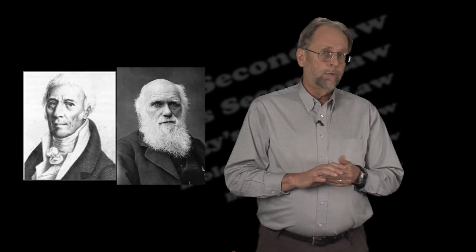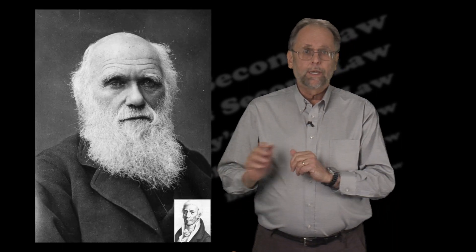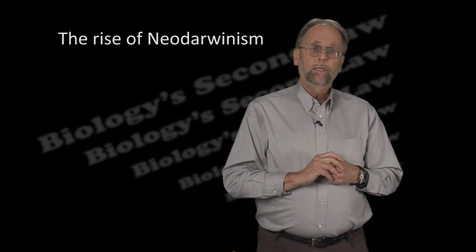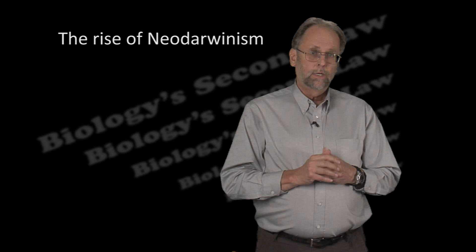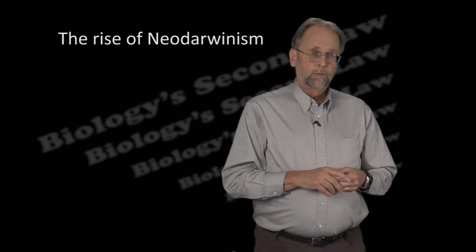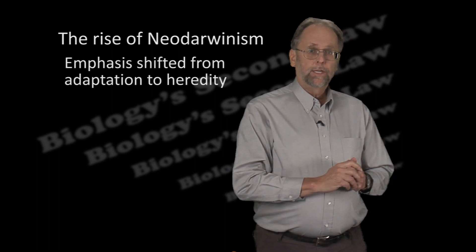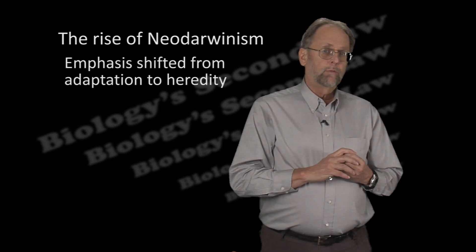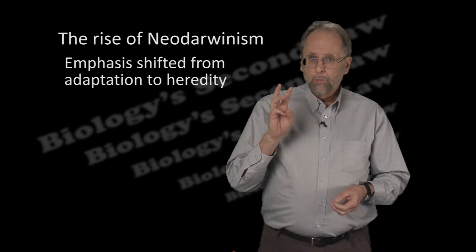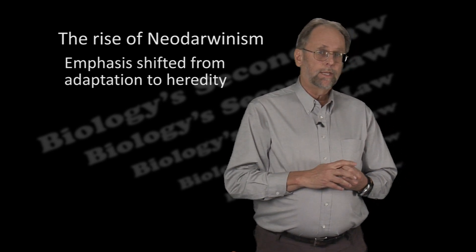Why then is Darwin now on top and Lamarck relegated to the fringes? This is the product of a radical philosophical shift that took place in the late 19th and early 20th centuries, in the emergence of what we now call Neo-Darwinism. What happened then was a shift in focus away from adaptation and toward mechanisms of heredity as the driver of evolutionary change. We can point to three major developments that led to this.